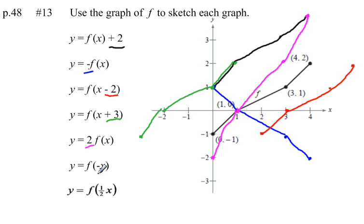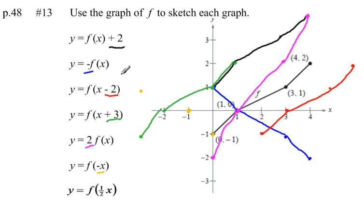Our next graph: y equals f of negative x. Remember, y equals negative f of x flipped our graph across the x-axis. This one flips our graph across the y-axis. Our first point is right on the y-axis so it won't change. The remaining points get flipped across the y-axis. Connecting these points gives us the same basic shape flipped across the y-axis.